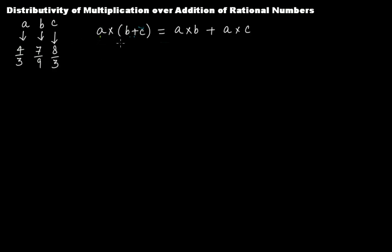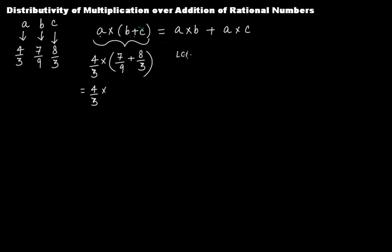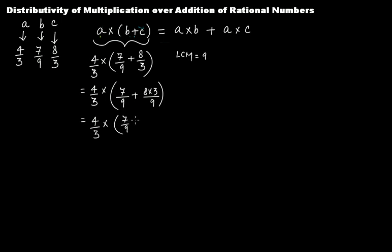First, let's perform a times (b plus c). So that is 4 over 3 multiplied by (7 over 9 plus 8 over 3). We need to add 7 over 9 and 8 over 3. The first step is to take the LCM of 9 and 3, which is 9. The first fraction stays as 7 over 9. For the second, 9 divided by 3 gives quotient 3, so 8 times 3 gives 24 over 9. This gives 4 over 3 times (7 plus 24) over 9.